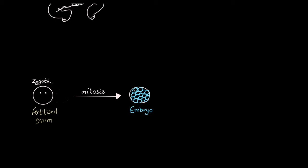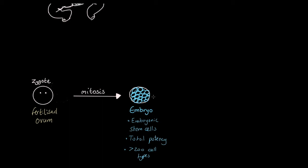These cells within this embryo are all completely identical to one another — we call them embryonic stem cells. These embryonic stem cells have what we might describe as total potency, or totipotency. What do we mean by that? They can go on to be any one of over 200 cell types — whether we're talking about a hair cell, a bone cell, a skin cell, or a brain cell. These cells have the capacity and potential to specialize into those types, and that process is called differentiation.